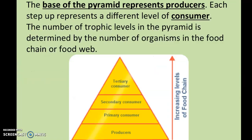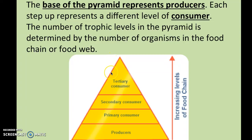The base of the pyramid is going to be producers. If you look at the bottom of the pyramid, you have the producer level, and it is the largest — that's generally the case. Above that are the consumer levels. The primary consumer is the herbivore, the organism that eats the producers, which are generally grass or algae. The secondary consumer eats the primary consumer, and the tertiary consumer — the apex predator — is at the top of the food chain, getting its energy from the secondary consumer.